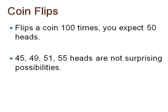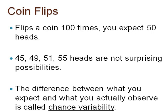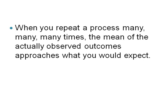The difference between what you expect and what you actually observe is called chance variability. We expect half the number of tosses to be heads, and we expect 95% of the confidence intervals to capture the population mean, but we understand that when we actually observe 100 coin flips or 100 confidence intervals, there is a chance for variability. However, when you repeat a process many, many times, the mean of the actually observed outcomes approaches what you would actually expect.